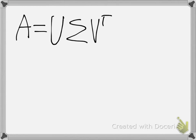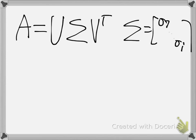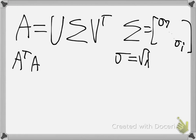Sigma contains σ₁, σ₂, ..., σₙ, and Sigma is basically the square root of some given eigenvalue. You need to find the eigenvalues of AᵀA or AAᵀ.